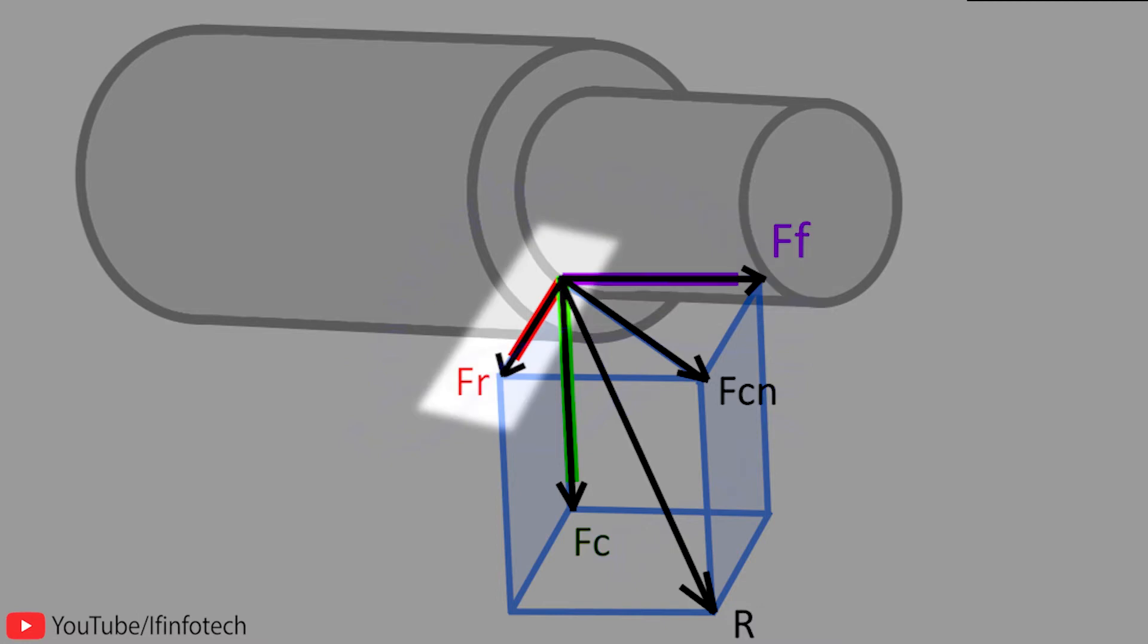Here FR is the radial force or thrust force which acts along the radius of workpiece. It is the smallest force acting along the axis of tool.